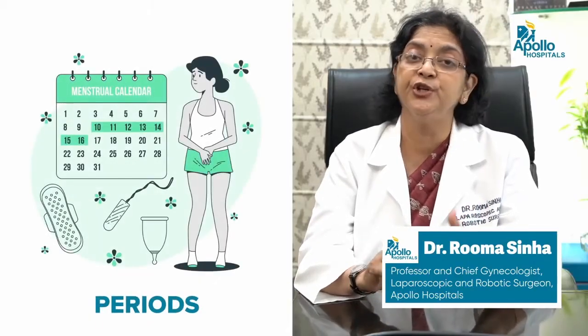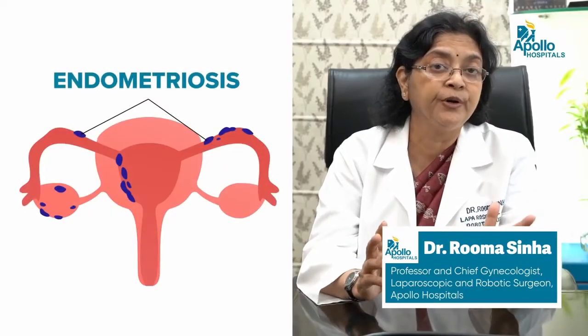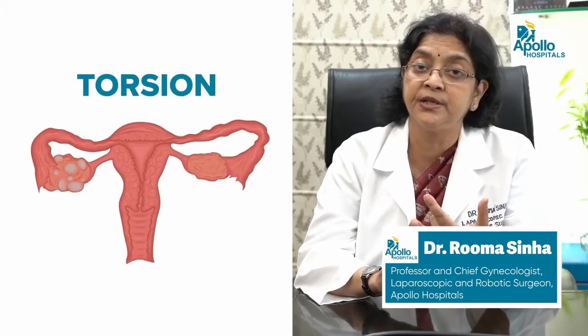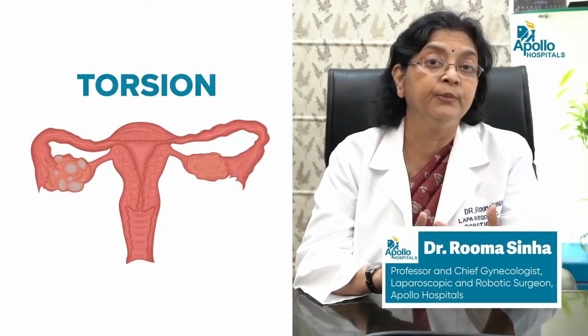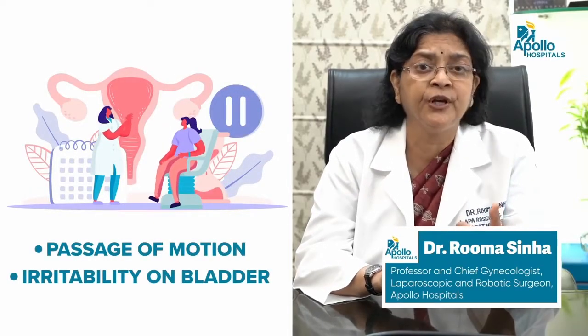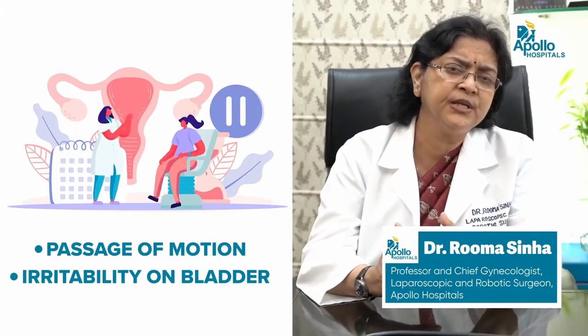Ovarian cyst pain can be a dull aching pain due to stretching of the ligaments and peritoneum, or it can cause cyclical pain during periods due to congestion in that area. It can also cause excruciating pain when the cyst undergoes torsion, sometimes requiring emergency treatment. Pain during defecation may occur if there is pressure on the rectum, or bladder irritability if the cyst sits on the bladder. However, most cysts are painless and asymptomatic.